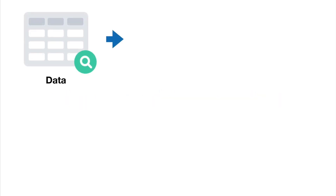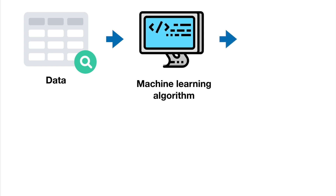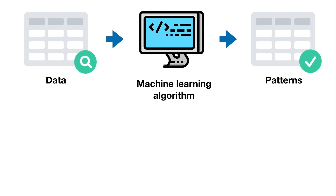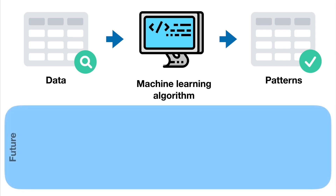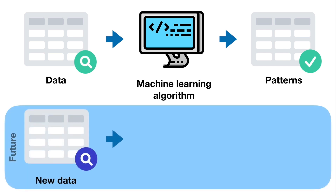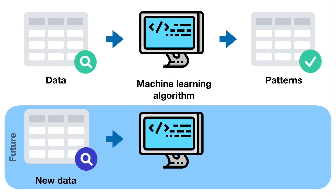In a single sentence, machine learning is using an algorithm or computer program to learn about different patterns in data, and then taking that algorithm and what it's learned to make predictions about the future using similar data. Machine learning algorithms are also called models, and we'll use the term interchangeably throughout the course.